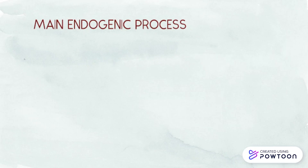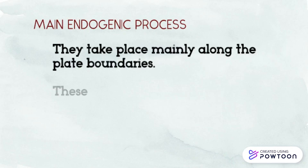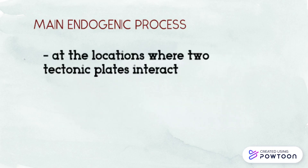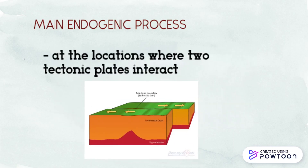The main endogenic processes take place mainly along the plate boundaries. These are zones that are not stable. They happen at locations where two tectonic plates interact.